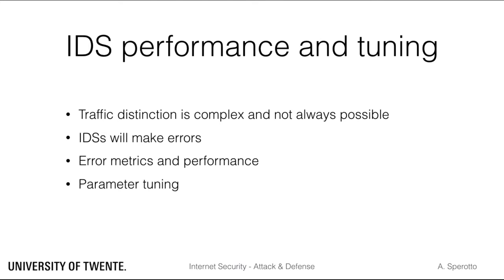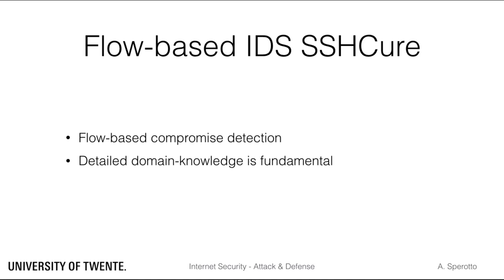Finally, we have reasoned about how an IDS needs tuning to adapt to different network traffic. We then have given a detailed example of a real IDS: the flow-based network IDS Shikure, which has been designed to identify hosts that have been compromised using SSH attacks.